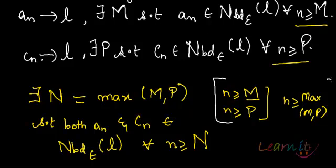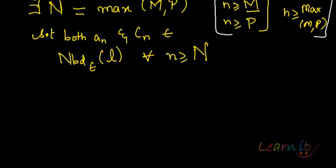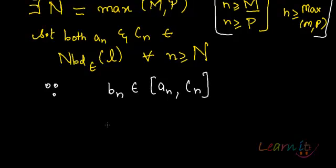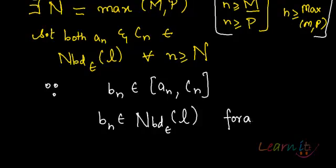Now, since b_n lies between a_n and c_n — b_n belongs to the interval [a_n, c_n] somewhere in this interval — that means b_n will also belong to the epsilon neighborhood of L for any n greater than or equal to this capital N, because it belongs to the interval [a_n, c_n], which means it will also be in the epsilon neighborhood of L.